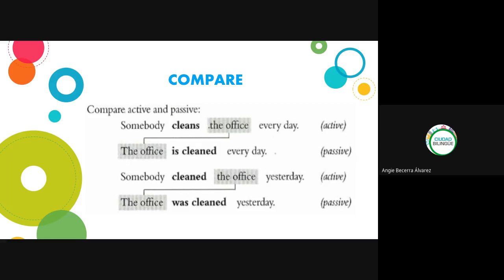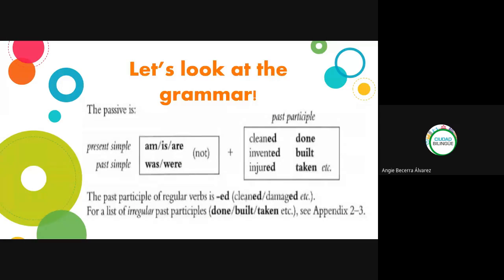¿Tienen alguna pregunta hasta ahí? ¿Todo está claro? Perfecto. Ayer también vimos la gramática de la voz pasiva en presente simple y pasado simple. La estructura es el verbo to be en presente o pasado más el verbo en pasado participio. Si es un verbo regular termina en -ed, y si es irregular hay que buscar su forma, porque puede cambiar todo o solo una parte.